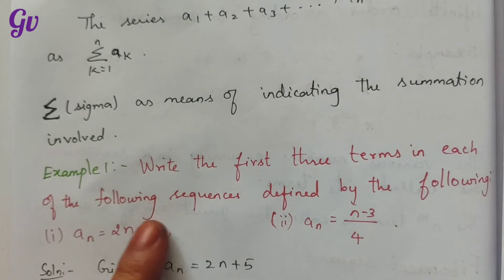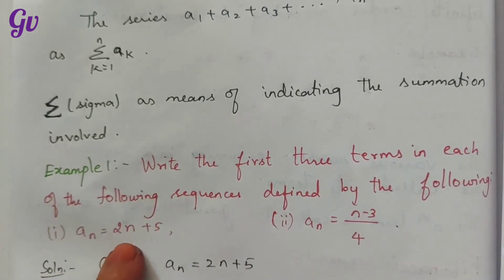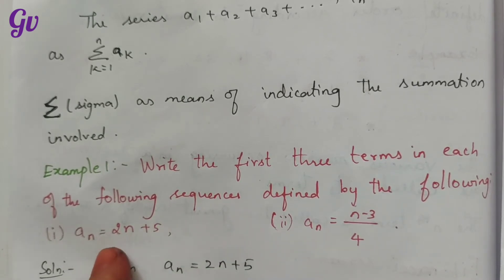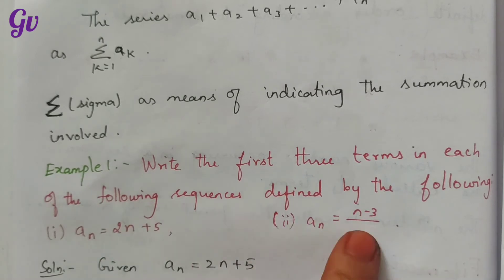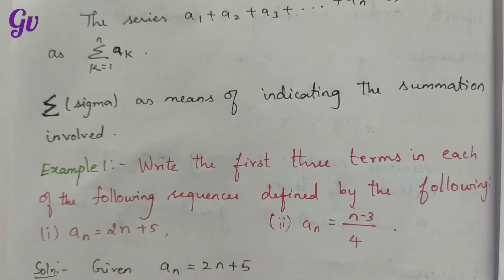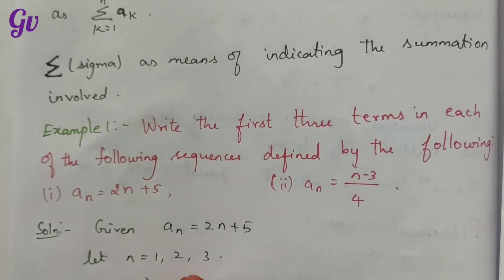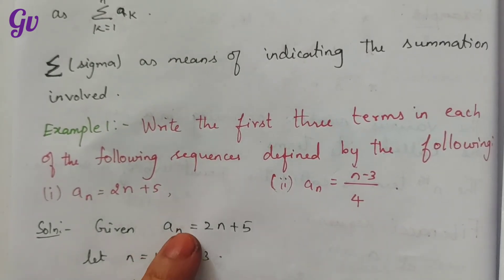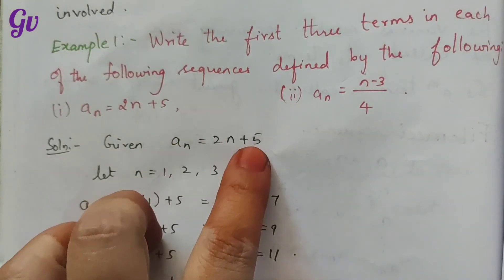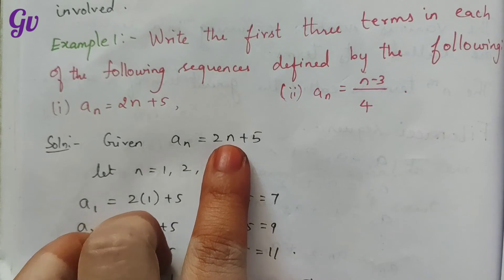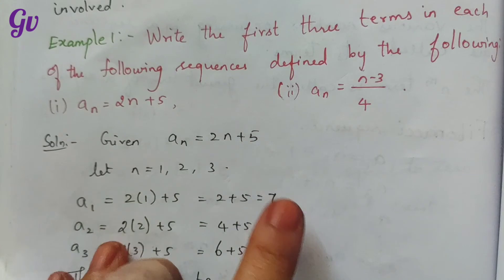Write the first three terms of the sequence defined by an equal to 2n plus 5. To find the first three terms, we substitute n equal to 1, 2, and 3 into the formula. When n equals 1: 2 times 1 plus 5 equals 2 plus 5 equals 7. When n equals 2: 2 times 2 plus 5 equals 4 plus 5 equals 9. When n equals 3: 2 times 3 plus 5 equals 6 plus 5 equals 11.